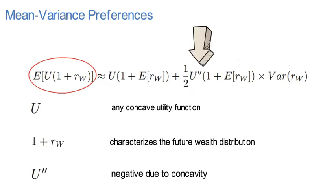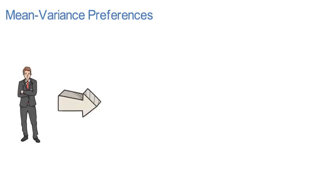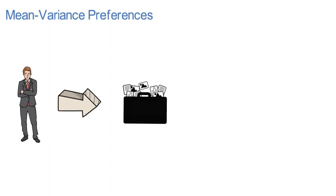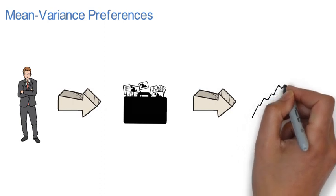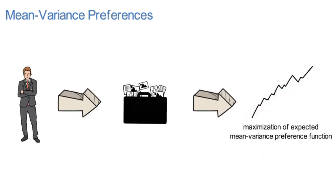The right-hand side of that last expression represents what is called mean-variance preferences. These are the preferences for which Markowitz in 1952 solves the optimal portfolio selection problem. A mean-variance investor wants to find a portfolio that generates a wealth distribution, 1 plus Rw, that maximizes the expected mean-variance preference function.